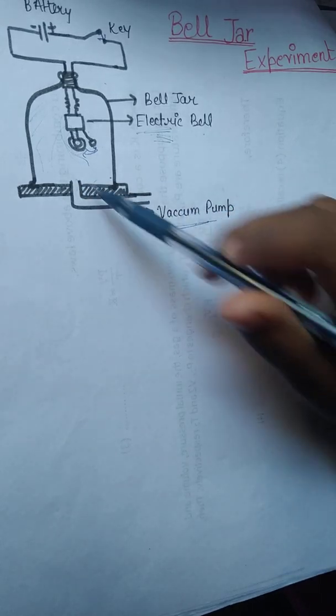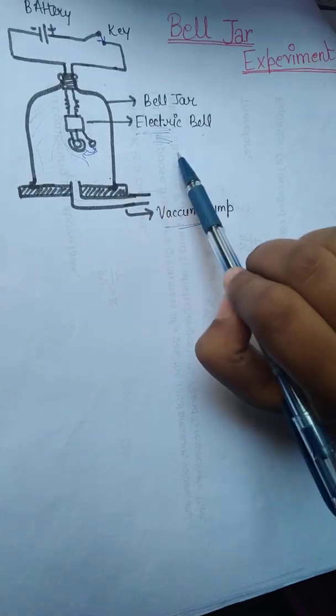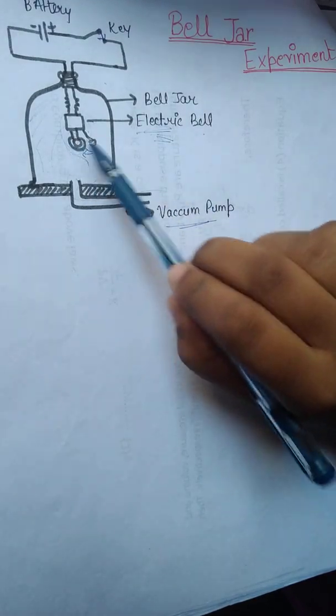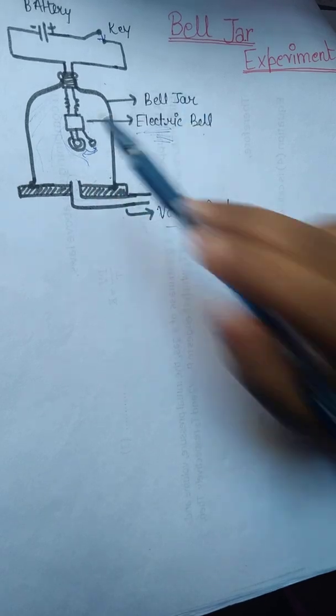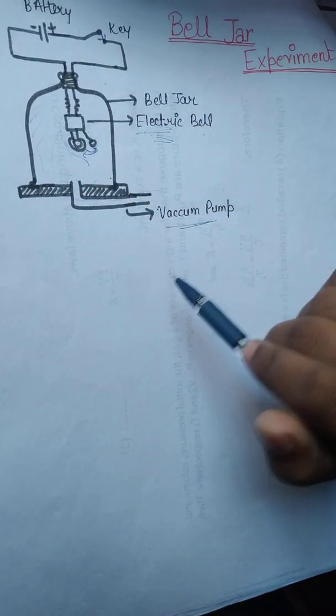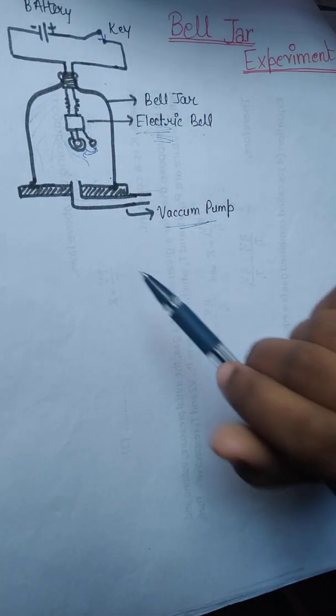When you draw all the air from this bell jar, you will notice that still the electric bell is ringing, meaning the hammer is striking on the gong, but no sound can be heard.